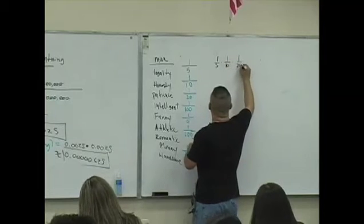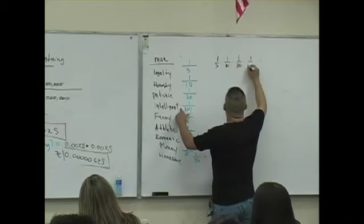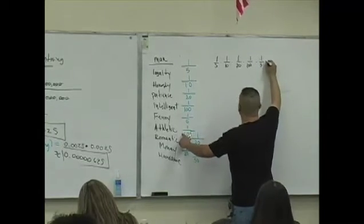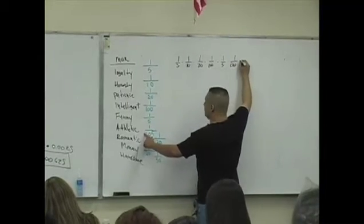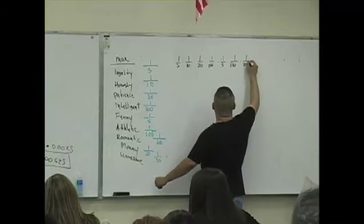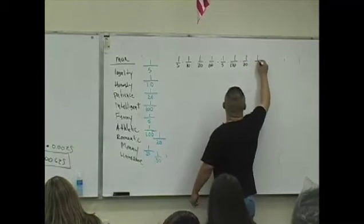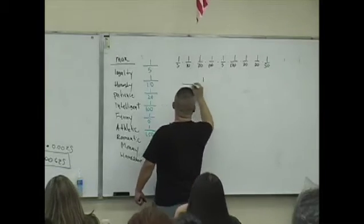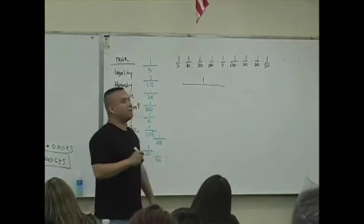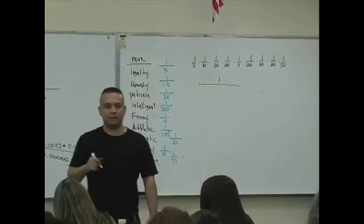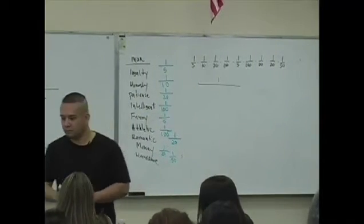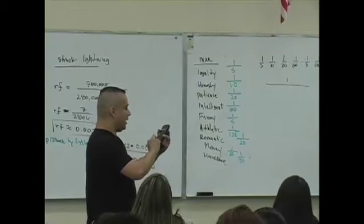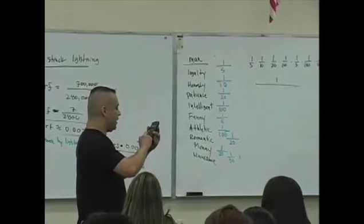All right, what do you guys want to do with all these traits, all these probabilities? You're going to multiply them, okay? One in five times one in ten times one in twenty times one in a hundred. One in five. It's a matter of your dreams. One in a hundred. One in twenty. One in twenty. One in fifty. The numerator is one. The denominator, multiply all those numbers together in the denominator. And tell me what you get.